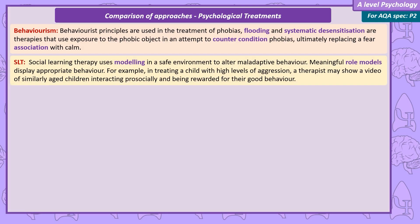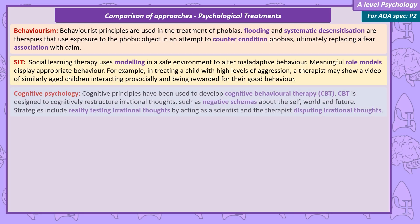Social learning therapy uses modelling in a safe environment to alter maladaptive behaviour. Meaningful role models display appropriate behaviour. For example, in treating a child with high levels of aggression, a therapist might show a video of similarly aged children interacting pro-socially and being rewarded for their good behaviour.